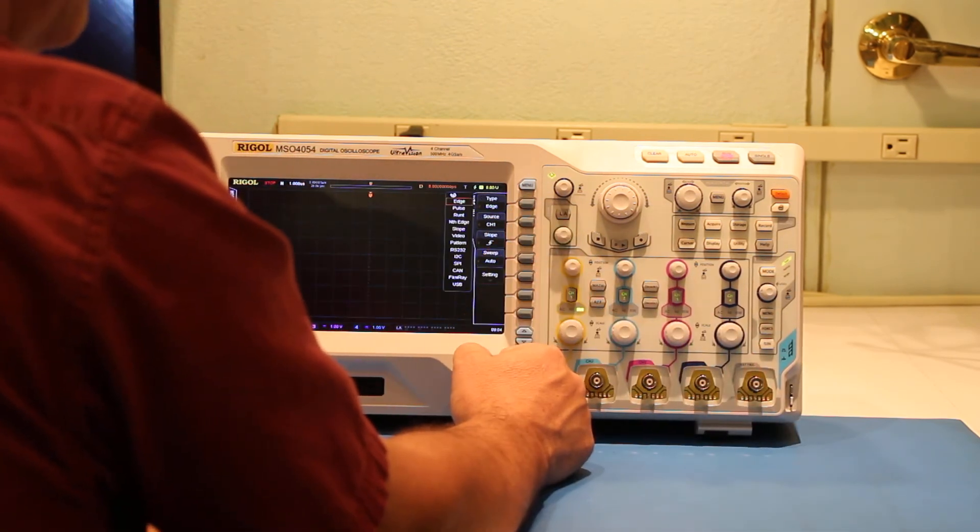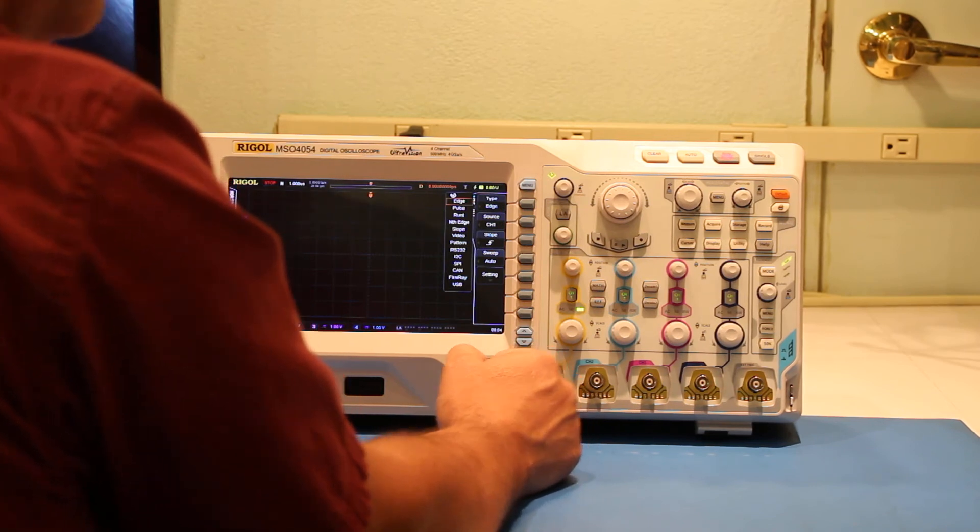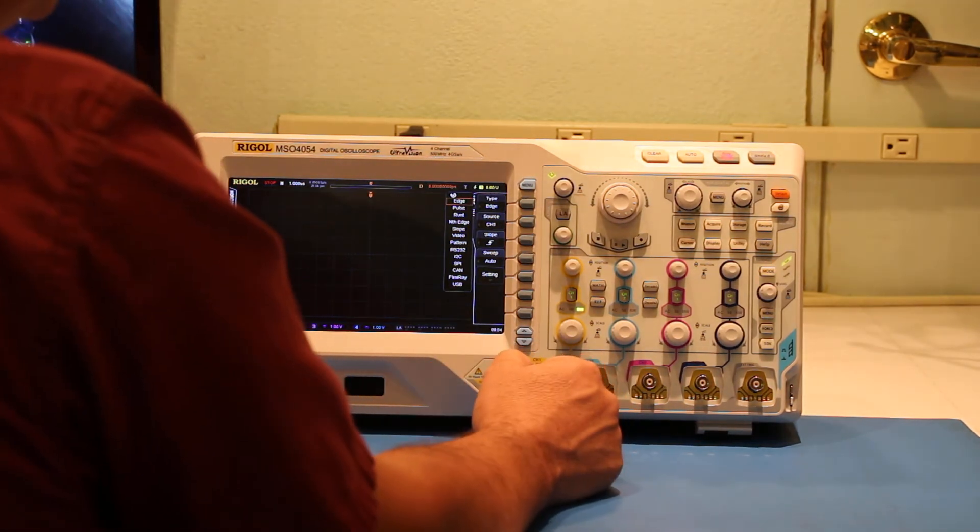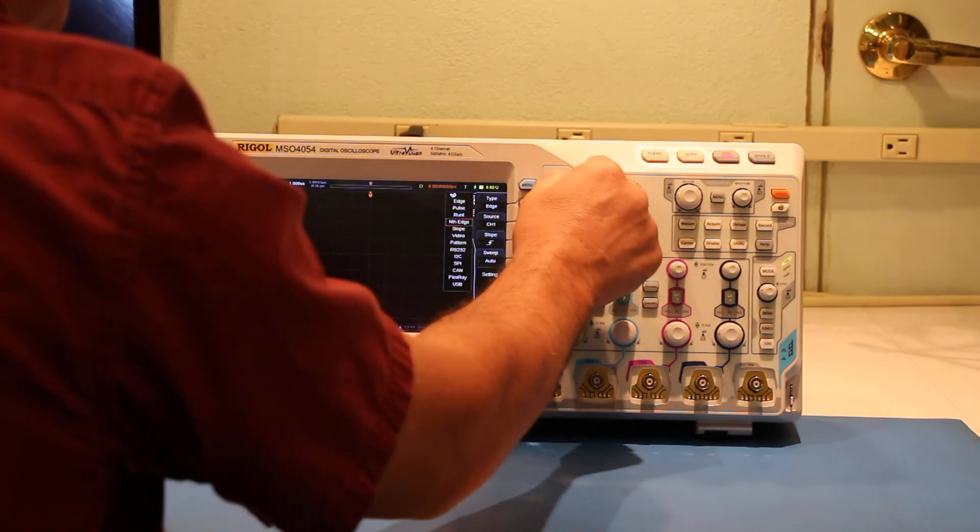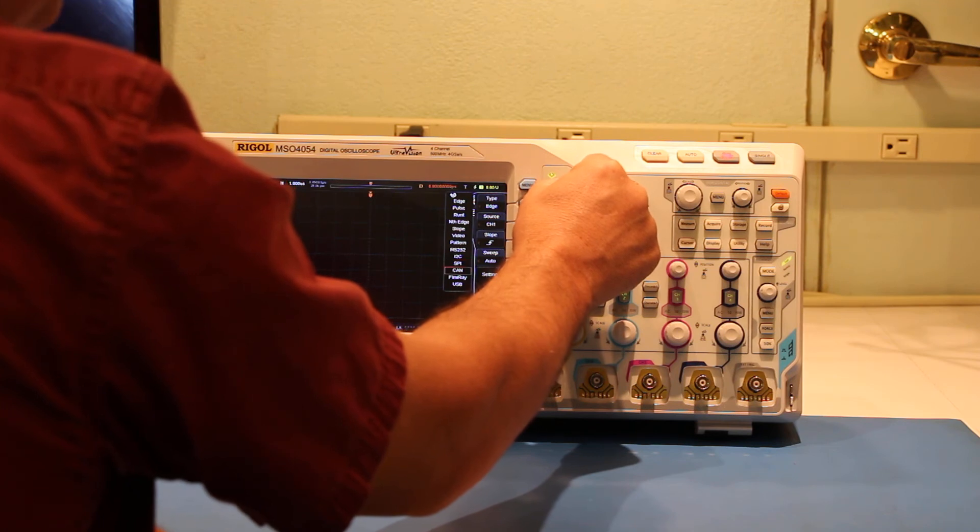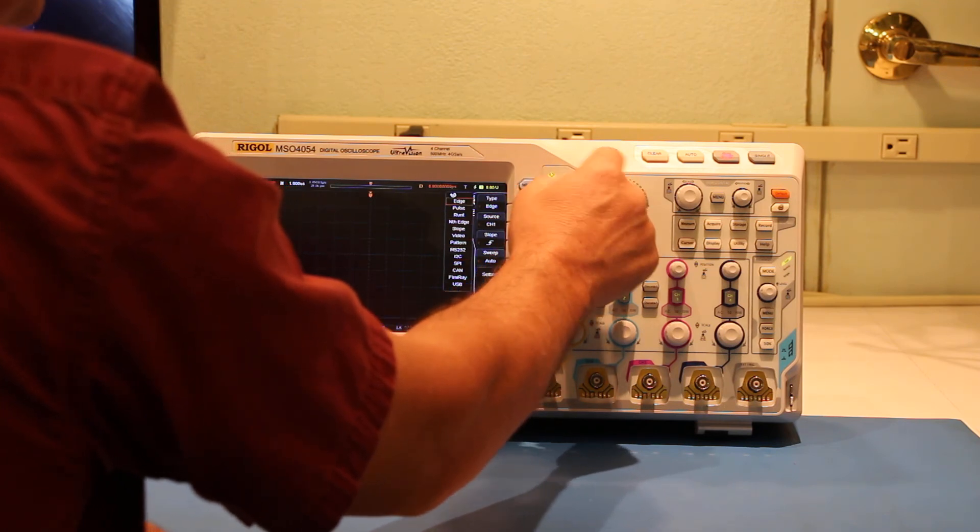Menu setting: we can change the different types of triggering. Now keep in mind this is a fully loaded scope, so this has many different things that we can trigger on, including RS-232, I squared C, SPI, CAN bus, FlexRay, USB, all those good things.